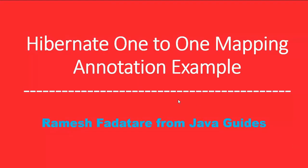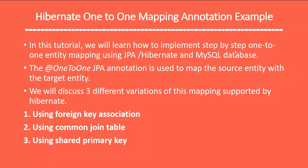Hi everyone, welcome back. In this video tutorial we'll learn how to implement step-by-step one-to-one entity mapping using Hibernate and MySQL database. We use the @OneToOne JPA annotation to perform one-to-one mapping. I'd like to discuss three different variations of this mapping supported by Hibernate: first is foreign key mapping, second using a common join table, and third using shared primary keys.